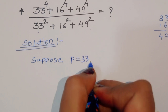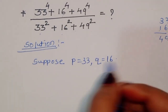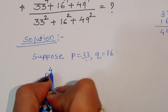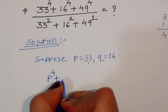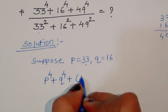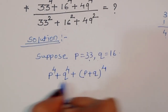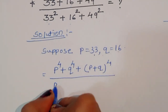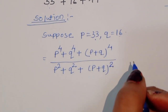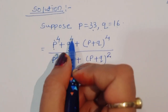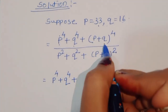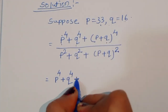We can assume P equals 33 and Q equals 16. Now, P⁴ plus Q⁴ plus (P+Q)⁴ equals P² plus Q² plus (P+Q)², in the denominator. We are using this formula: P⁴ plus Q⁴ plus (P+Q)⁴.